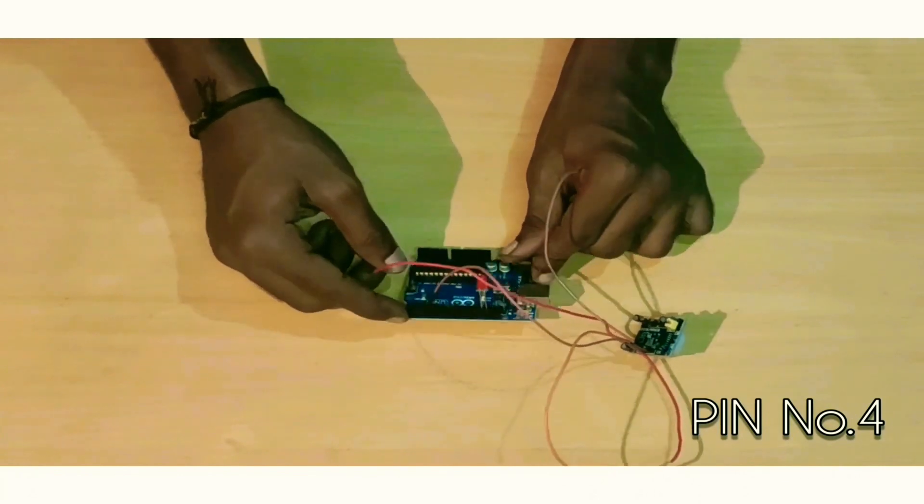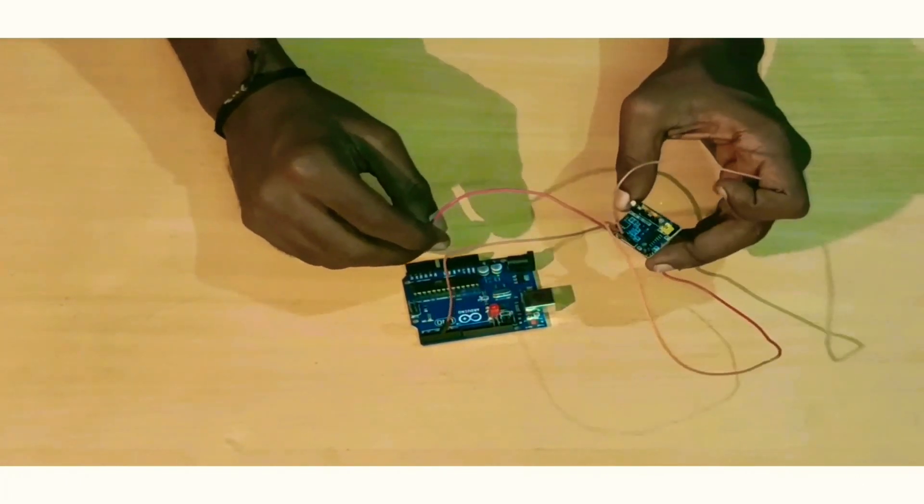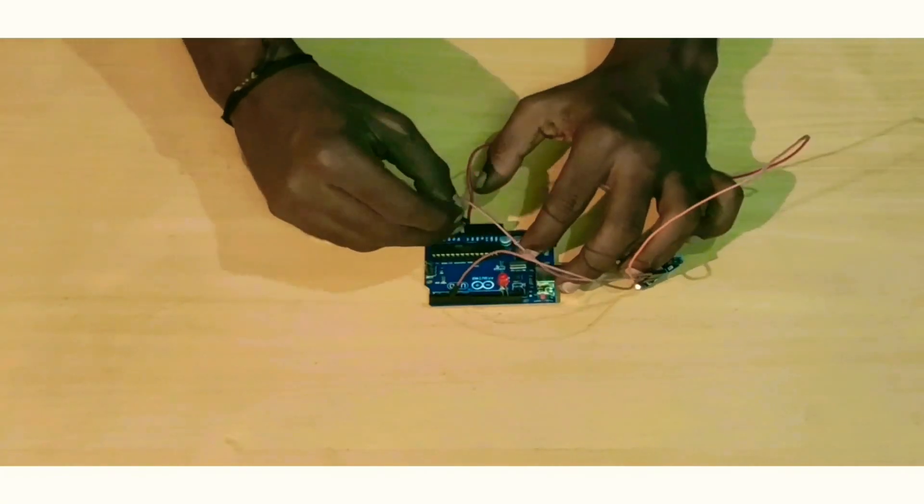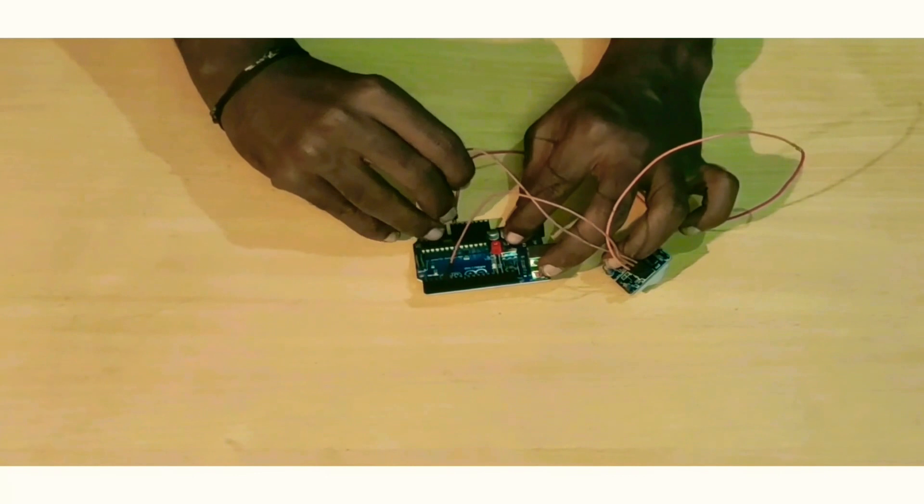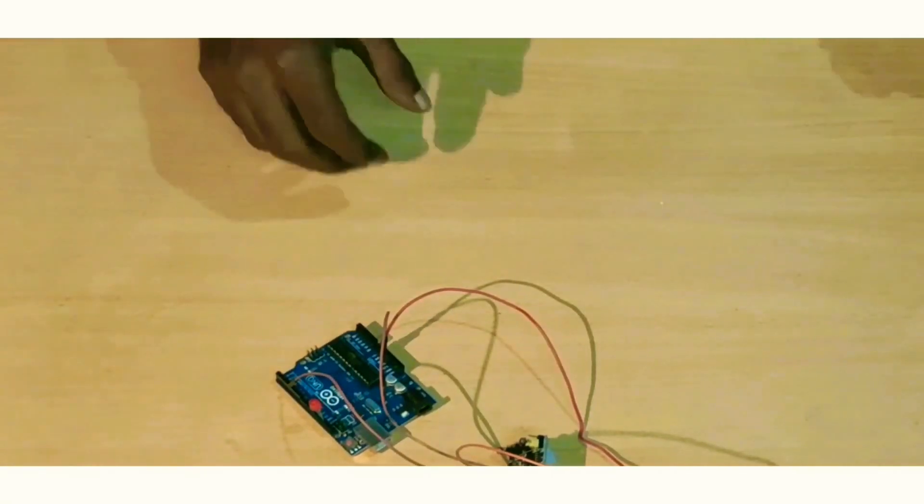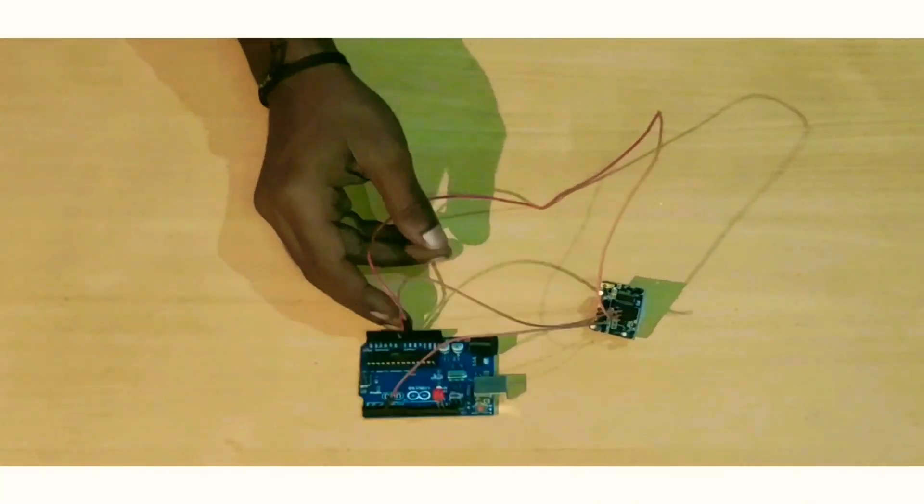This is PIR sensor. This is a pyroelectric sensor. This is temperature dependent. Actually, there is a change in temperature and a minimum amount of voltage is produced. That's why electricity is produced. This is the sensor.